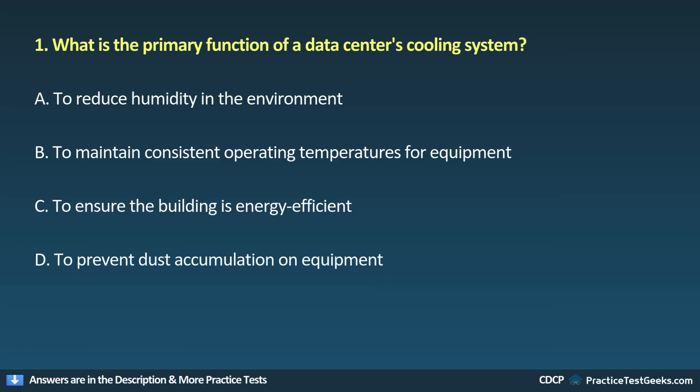Question 1. What is the primary function of a data center's cooling system? A. To reduce humidity in the environment. B. To maintain consistent operating temperatures for equipment. C. To ensure the building is energy efficient. D. To prevent dust accumulation on equipment.